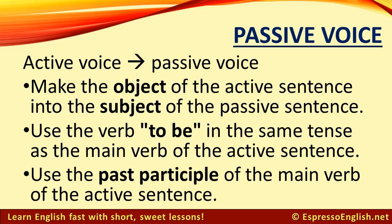To change the active voice into the passive voice, make the object of the active sentence into the subject of the passive sentence. Use the verb to be in the same tense as the main verb of the active sentence, and use the past participle of the main verb of the active sentence.